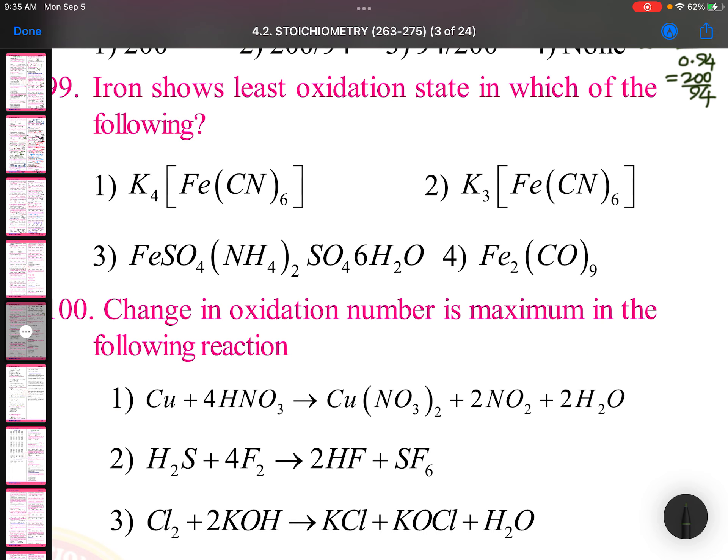Iron shows least oxidation state in which of the following. K4[Fe(CN)6]: iron oxidation state will be plus 2 because each potassium plus 1, each cyanide minus 1. K3[Fe(CN)6]: each potassium plus 1, each cyanide minus 1, so this will come plus 3.